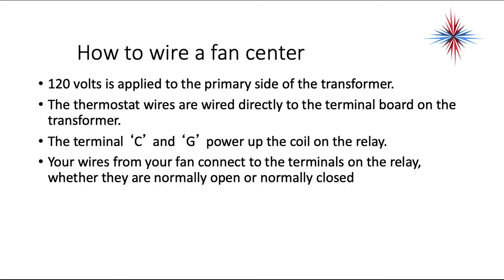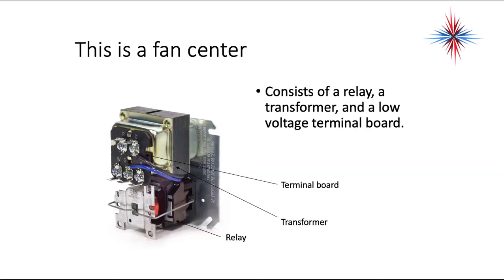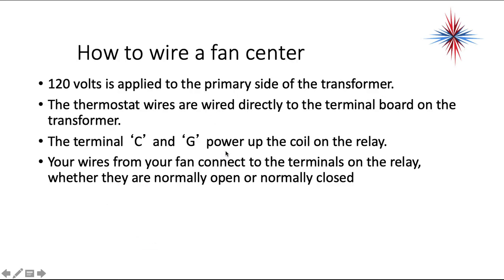120 volts is applied to the primary of the transformer. Those wires are usually hanging off here on the back. This is designed to mount on a square wiring box. The thermostat wires are wired directly to the terminal board on the transformer. The terminal C and G is used to power up the coil on the relay. Your wires from your fan connect to the terminals on the relay, whether they're normally open or normally closed.